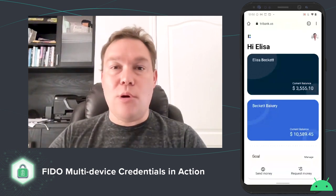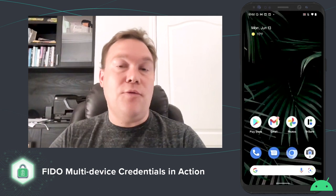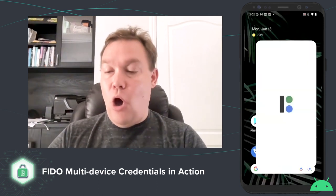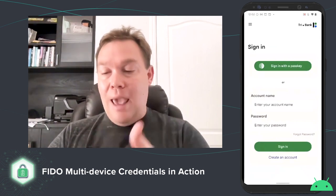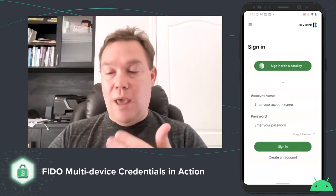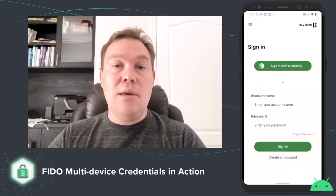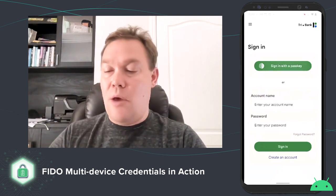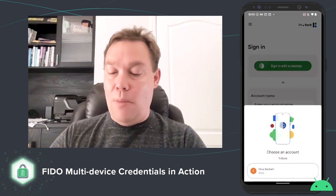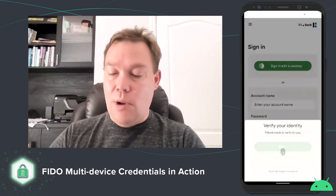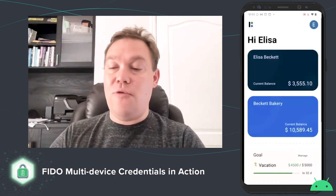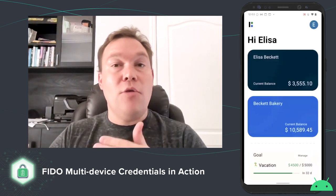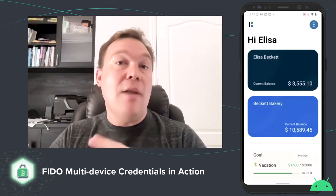This also works if I decide to download the application from the Google Play Store. So I download the TryBank app and open it. Here I get the option to sign in with an account, or I can sign in with a Passkey. I click sign-in with a Passkey, my Passkeys get listed, I click the one I want to use, simply touch the fingerprint sensor, and instantly I'm signed in. So Passkeys created on the web also work on the app, and vice versa.